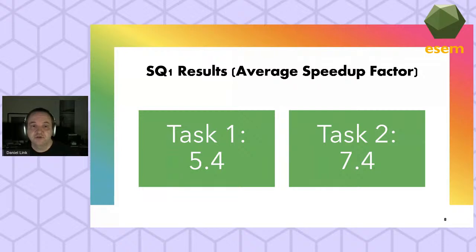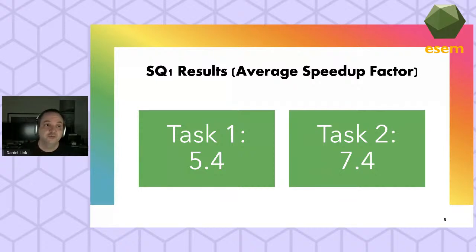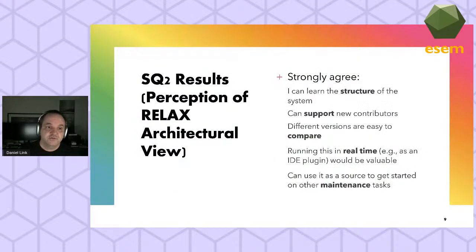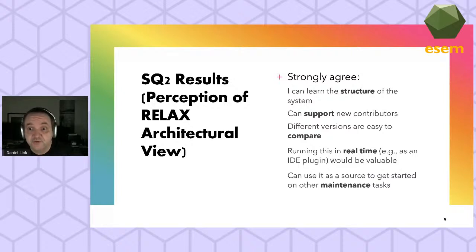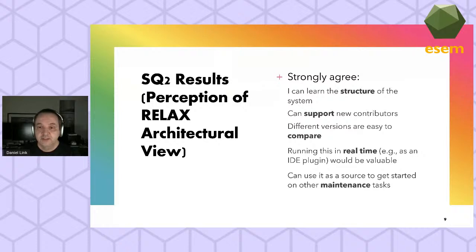For the first study question, the result shown is the average time of the control group divided by the average time of the experimental group. Speed-up on task one was a factor of 5.4 and on task two we got 7.4. Regarding participant perceptions, they strongly agreed that they can learn the structure of the system from the recovery results, the results can support new contributors, they can make different versions easy to compare, running this as a real-time IDE plugin would be valuable, and it can be used as a source to get started on other maintenance tasks.